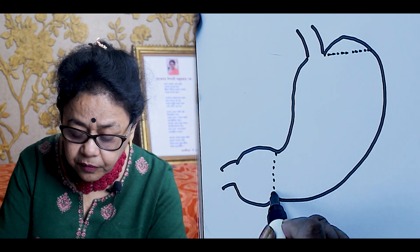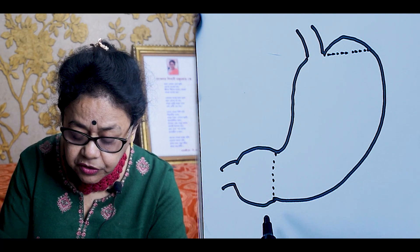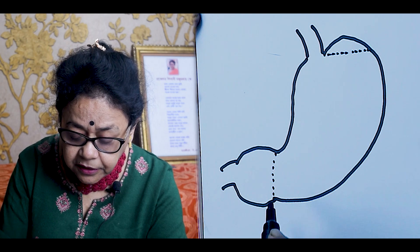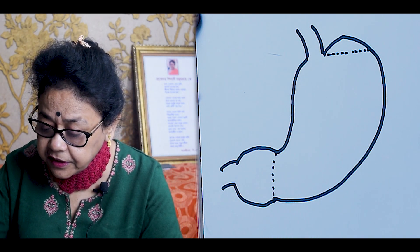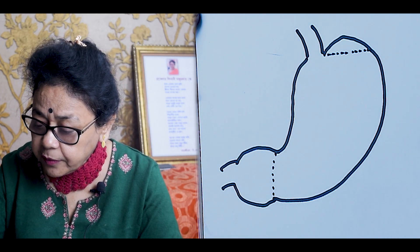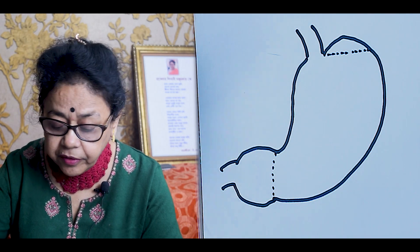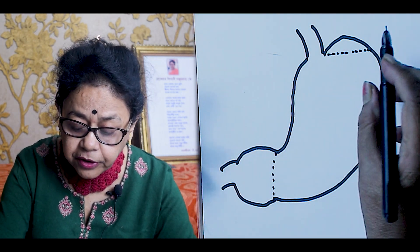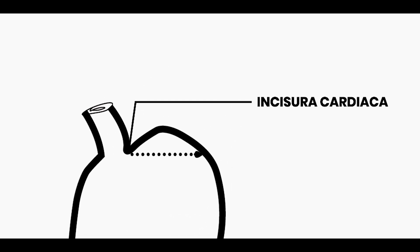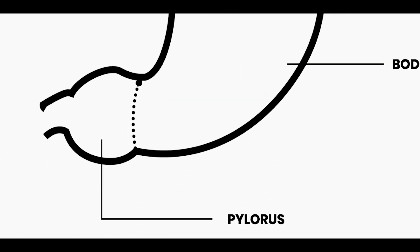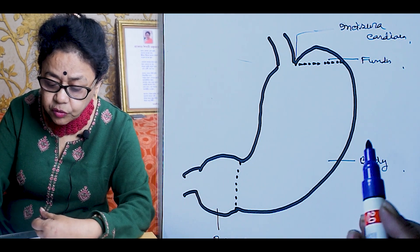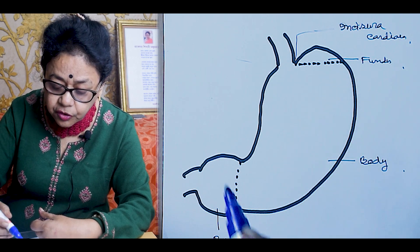Now from the incisura angularis, draw a vertical line — the right side and left side define the body. In your drawing, you have to mark: this is the incisura cardiacae, this is the fundus, this is the body, and this is the pylorus.